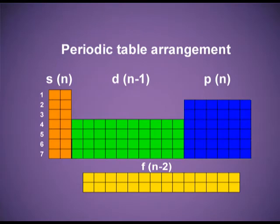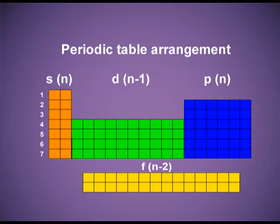From the slide you can see that the orange-colored two groups are the S block. The blue-colored six groups are the P block. The 10 groups shown in green are the D block elements, and at the bottom the two series shown in yellow are the F block elements. So in total, depending upon the valence shell electronic configuration and which subshell the last electron enters, there are four blocks in the periodic table.